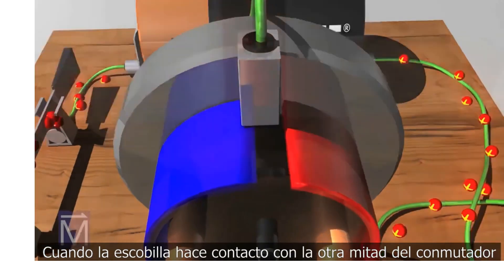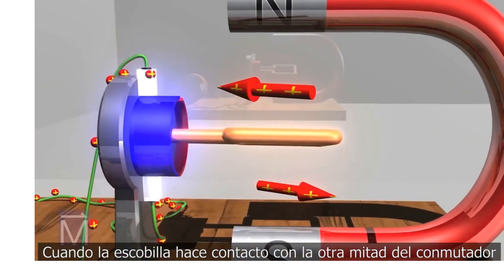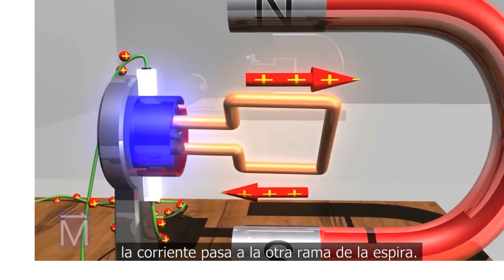After jumping that gap and making contact with the other half of the commutator, it sends current through the other arm of the armature.